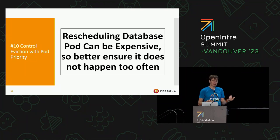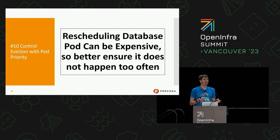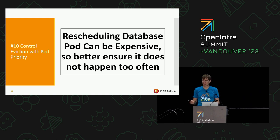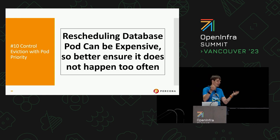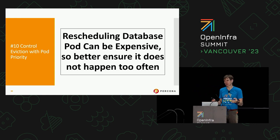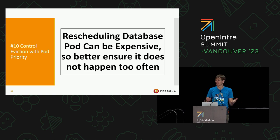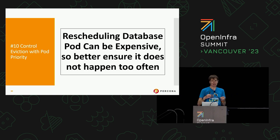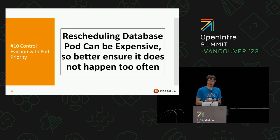The next one is to control eviction pod priorities. For databases, even in the best case, it takes some time to recreate a pod. The database often needs to warm up — getting data into cache to achieve optimal performance. So you want Kubernetes to go easy on killing database pods and rescheduling. The operator should take care of limiting performance impact, but you also want to minimize how often it happens.